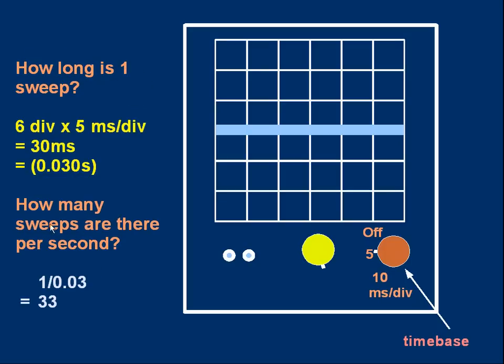Okay, let's do it. How long is one sweep? Well, there are 6 divisions across, so the spot has moved across 6 divisions. Each division is 5 milliseconds because that's a time-based setting. That means the time it's taken, 6 divisions times 5 milliseconds per division, 30 milliseconds, 0.03 seconds.